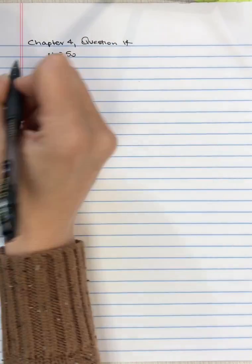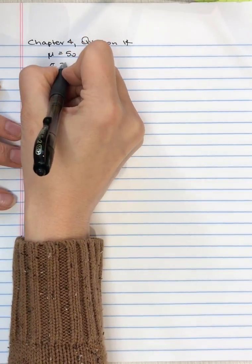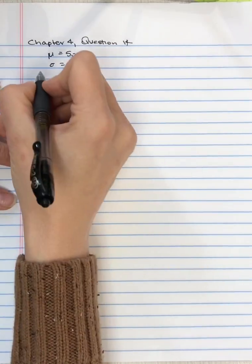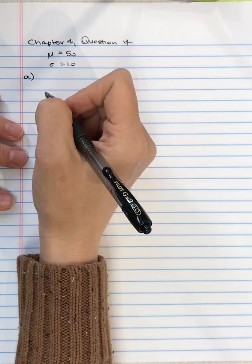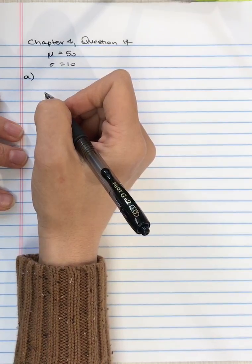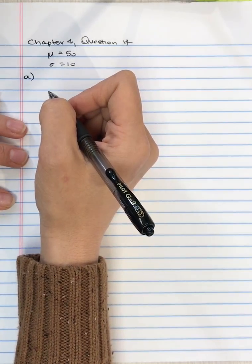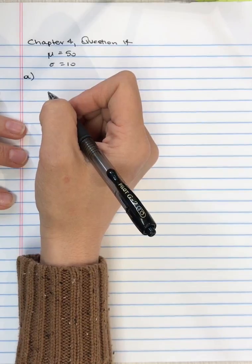and a standard deviation of 10. If three points were added to every score in the population, what would the new values for the mean and the standard deviation be? This doesn't require that we know the actual values.